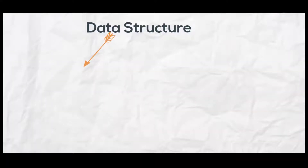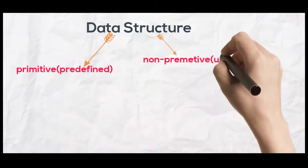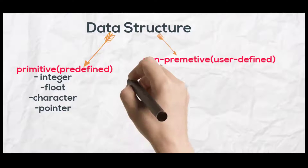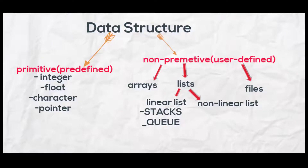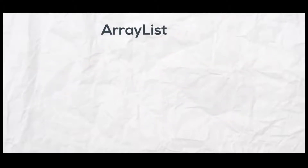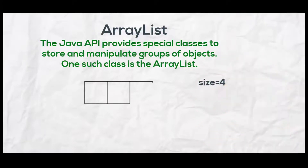This is the hierarchy of data structures. Let us discuss ArrayList in Java. Java API provides special classes to store and manipulate groups of objects. One such class is the ArrayList. Let us consider an ArrayList with a size of 4.